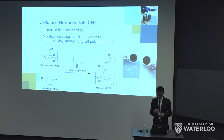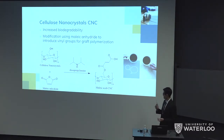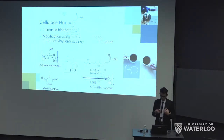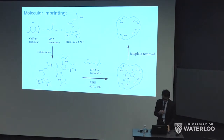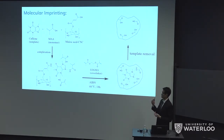We begin the synthesis of our molecular imprinted polymers by chemically modifying the surface hydroxyl groups on CNC, or cellulose nanocrystals. We modify them using maleic anhydride, which will introduce maleic acid groups that have a vinyl group. This vinyl group can serve as an initiation site for the graft polymerization of our monomer, methacrylic acid. In this synthesis, the caffeine serves as the template molecule, which will form a complex with the functional monomer, methacrylic acid, and the polymerization will occur on the surface of the cellulose nanocrystals.